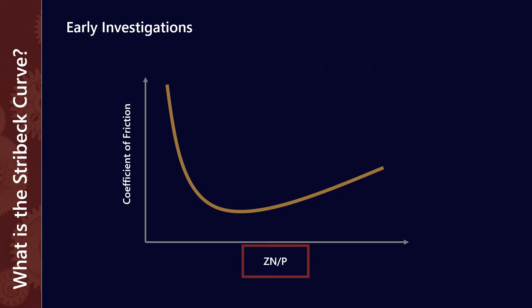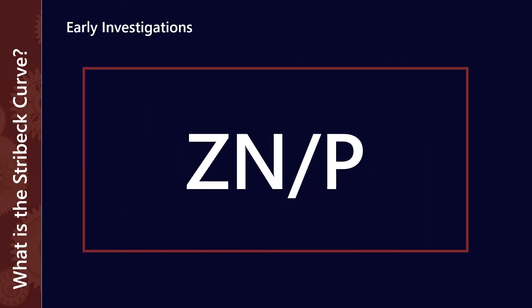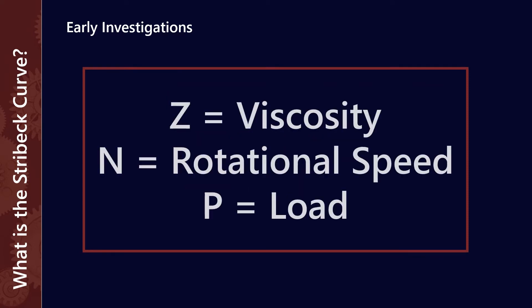ZN on P is a bit of an arbitrary construct. Z is viscosity, N is rotational speed, and P equals load. It's really a way of putting on a single axis all of the major components we need to take into account when talking about bearings, gears, and cams.